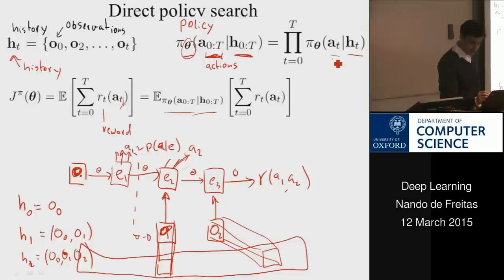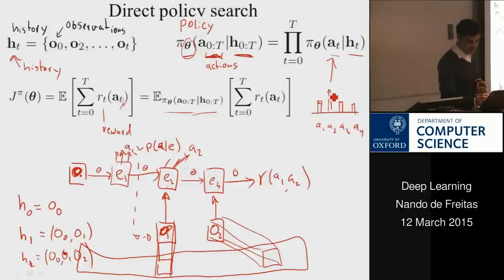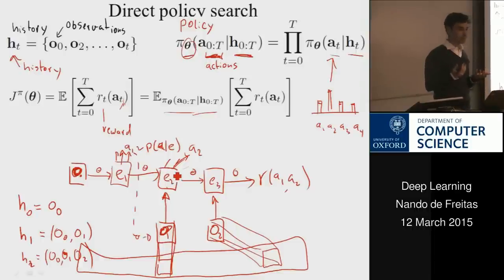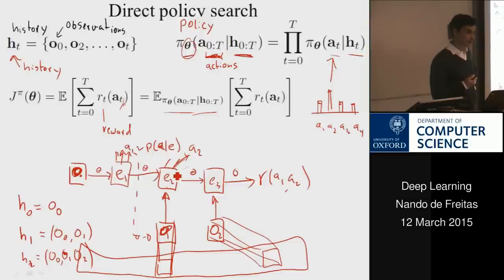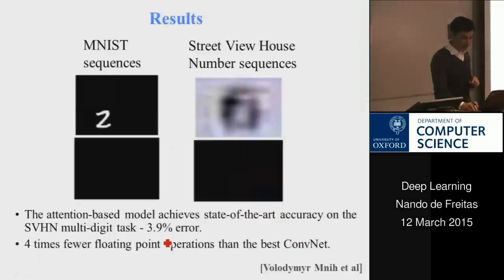At each time step, the policy is essentially a discrete distribution over actions. The heights of this softmax distribution depend on the neural network parameters. In this model, the action is the location — L2 indicates where in the image to go and grab data, using a foveation model with high resolution in the center and lower resolution toward the edges. Knowing the parameters and the previous input determines the next output location.